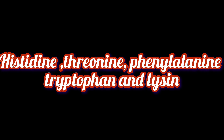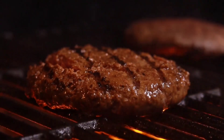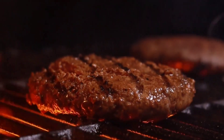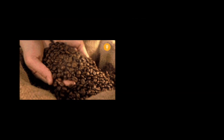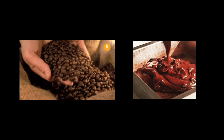It has been found that histidine, threonine, phenylalanine, tryptophan, and lysine are the most active amino acids. So first we have sugar plus amino acid or protein, which can convert into a complex of sugar and amino group, then into colorless intermediates, and finally into brown compounds and flavoring substances. The Maillard reaction is responsible for the desirable browning of most heated foods such as bread crust, roast meats, and roasted coffee beans. This browning is accelerated by heat and occurs very quickly in ovens, slowly at room temperature, and very slowly at refrigerator temperatures.